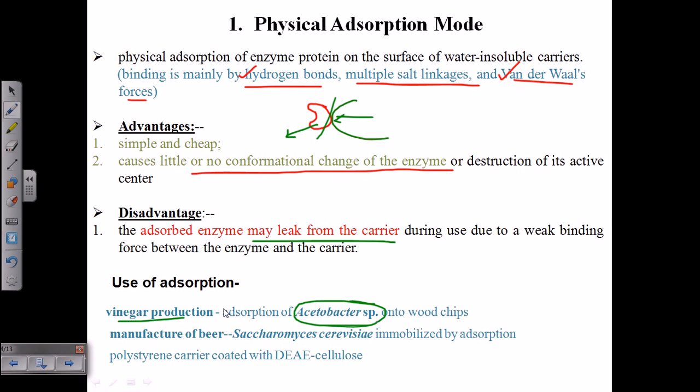In manufacturing of beer, Saccharomyces cerevisiae is immobilized by absorption and attachment to polystyrene. Remember, I've already discussed that polystyrene provides the matrix for the attachment of cells or enzymes. Here it can be used with DEAE cellulose, which will provide the matrix because it is...